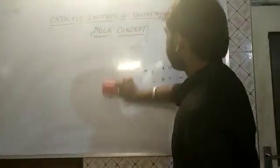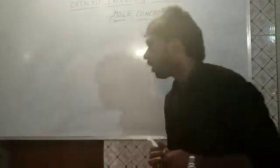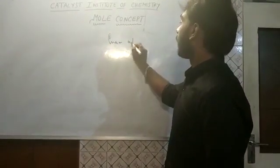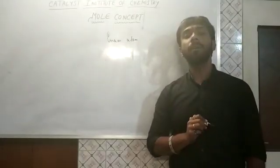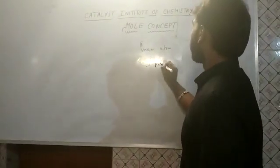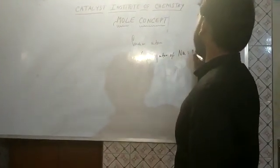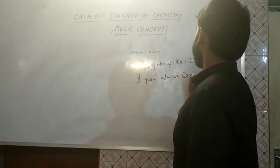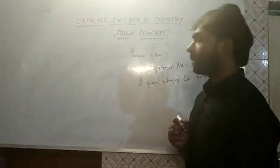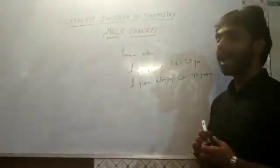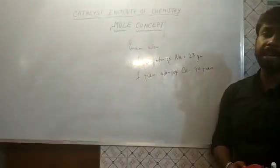Next we will discuss gram atoms. Wherever we represent any atomic weight in grams, it is known as 1 gram atom. So 1 gram atom of sodium (Na) is equal to 23 grams, and 1 gram atom of calcium (Ca) is equal to 40 grams. Whenever atomic weights are expressed in grams, that weight equals 1 gram atom of that element. The formula to find the number of gram atoms is: number of gram atoms = weight provided divided by actual weight.